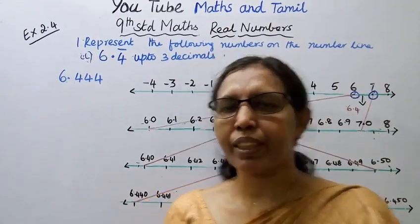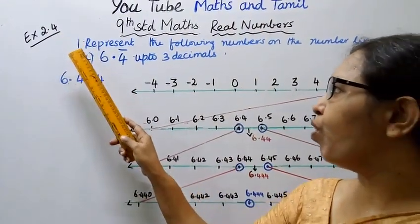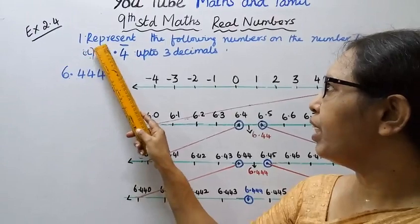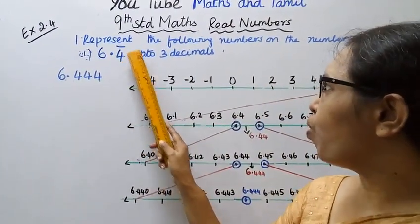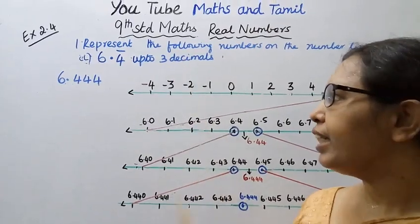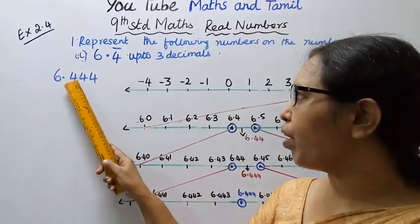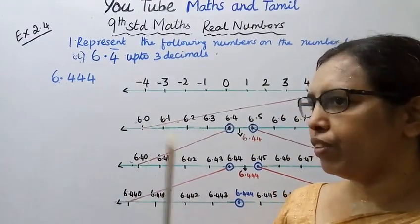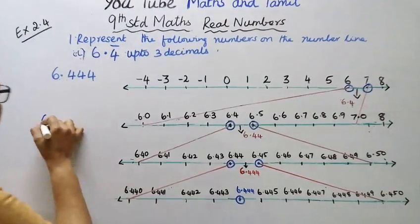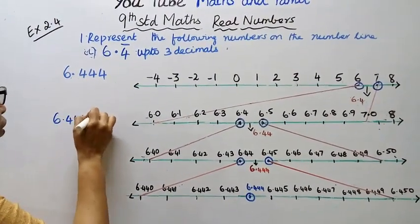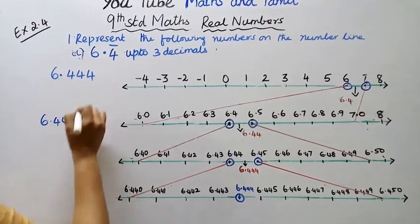Hello students, welcome to Max and Tumble channel. Class 9 student, real numbers, Exercise 2.4. Represent the following numbers on the number line: 6.4 bar, up to 3 decimals. 3 decimals gives us 6.4 bar, which equals 6.444.